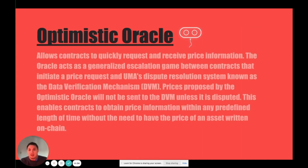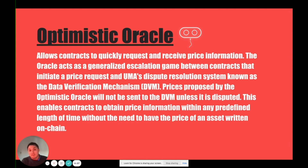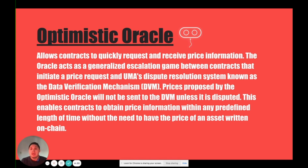UMA's Optimistic Oracle allows contracts to quickly request and receive a price. The Oracle acts as an escalation game where if someone proposes a price and it is not disputed, it is considered settled, while also allowing prices to be disputed. Think of a time when a liquidation happened and there was no dispute mechanism for any of those contracts to go through — this is not an ideal situation. UMA's Optimistic Oracle solves this by allowing a proposer and a disputer to act in tandem, keeping each other in check, and it is always incentivized for the right price to be the end outcome.